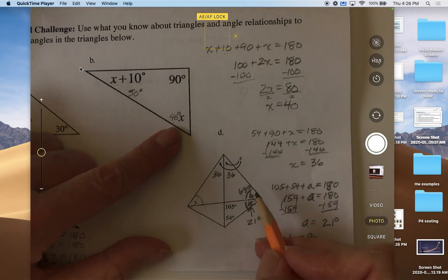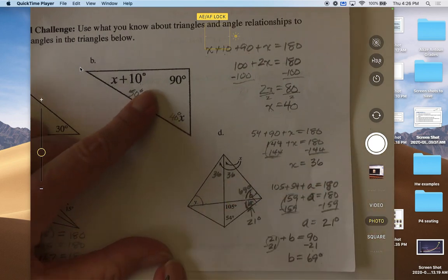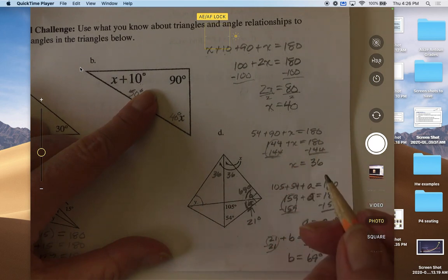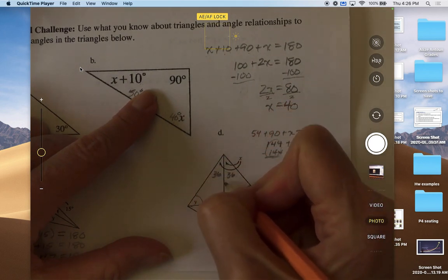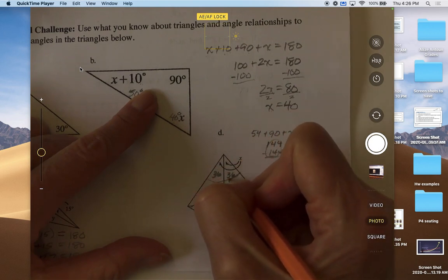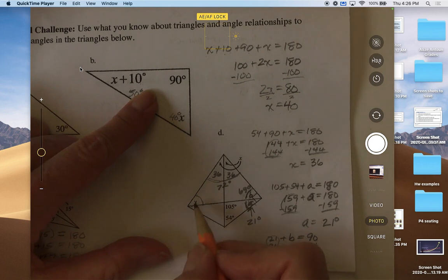Now we know what this angle is, and we know what this angle is because we just add together 36 and 36. So that would be 12 plus 60, so that whole angle there is 72 degrees.